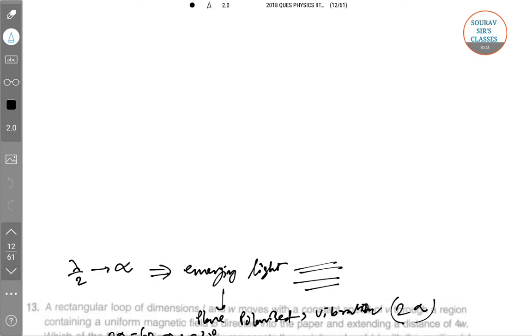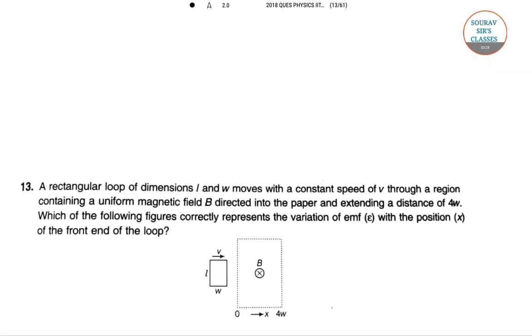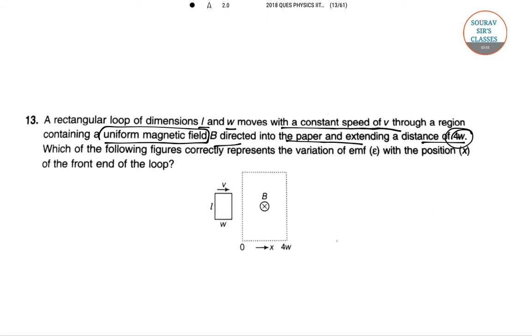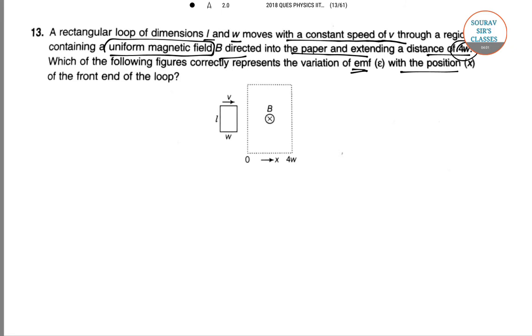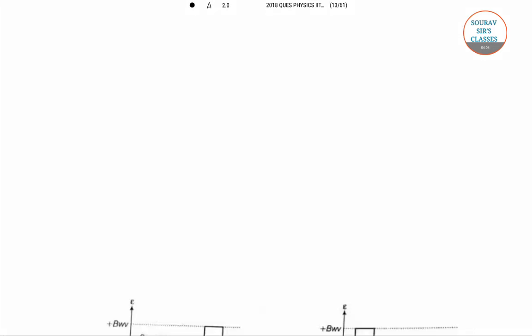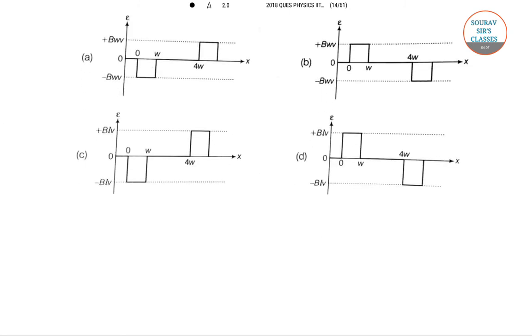Next one, it's question number 13. This bar kya diya hai yeh log. Ek rectangular loop of dimension agar ham log lete hai, if I take a rectangular loop of dimension l and w moves with constant speed of v through a region containing ek uniform magnetic field diya hua hai B directed into the paper, aur extend to a distance diya hua hai. So which of the following figure correctly represent the variation of the electromagnetic force emf with the position x.